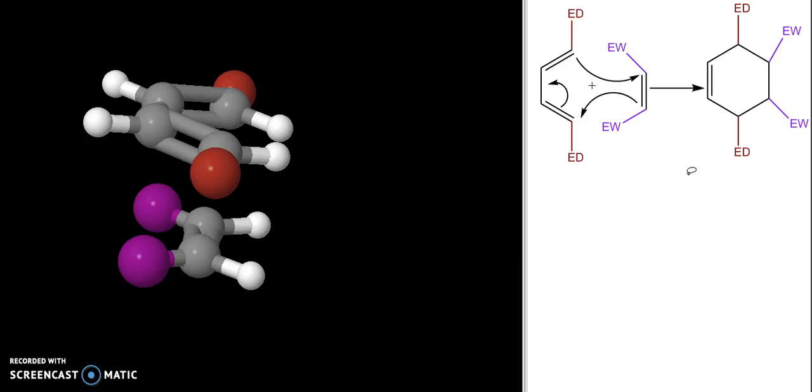What I want to focus on is the relative orientation of my substituents in this product. In other words, this electron donating group and this electron withdrawing group—are they cis to one another in my product or are they trans to one another? To look at that, we need to examine how this diene and this dienophile approach one another.